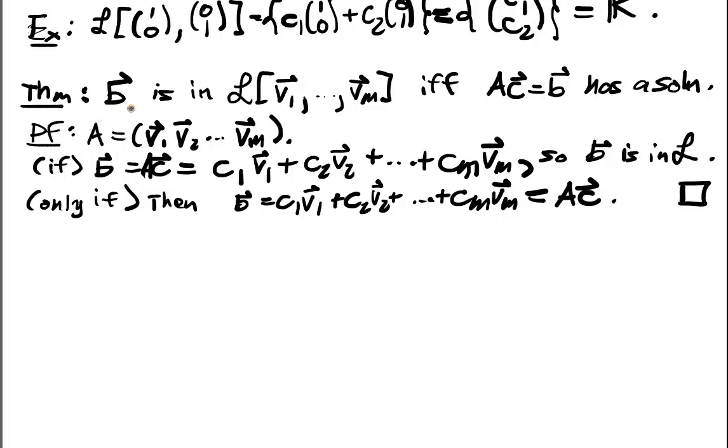And that completes the proof. Really simple, right? So B is in here if and only if this matrix has a solution. It was almost too easy.